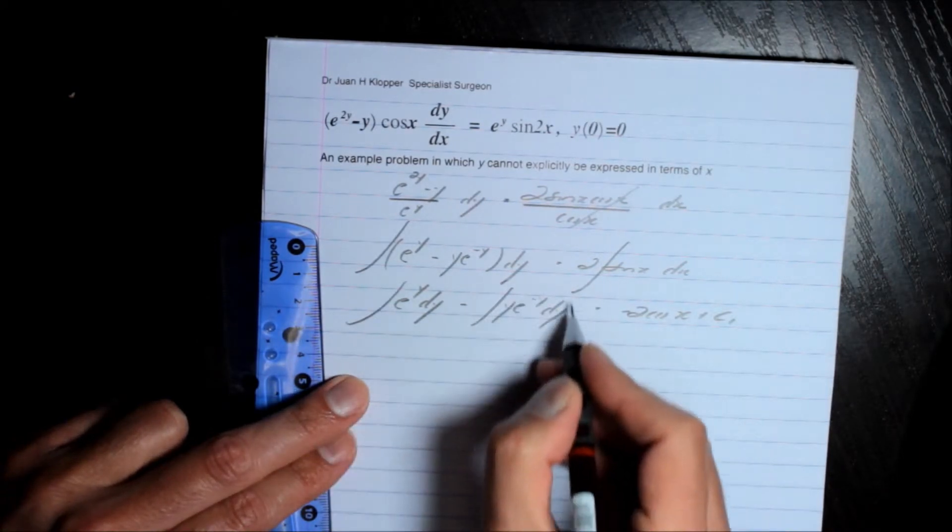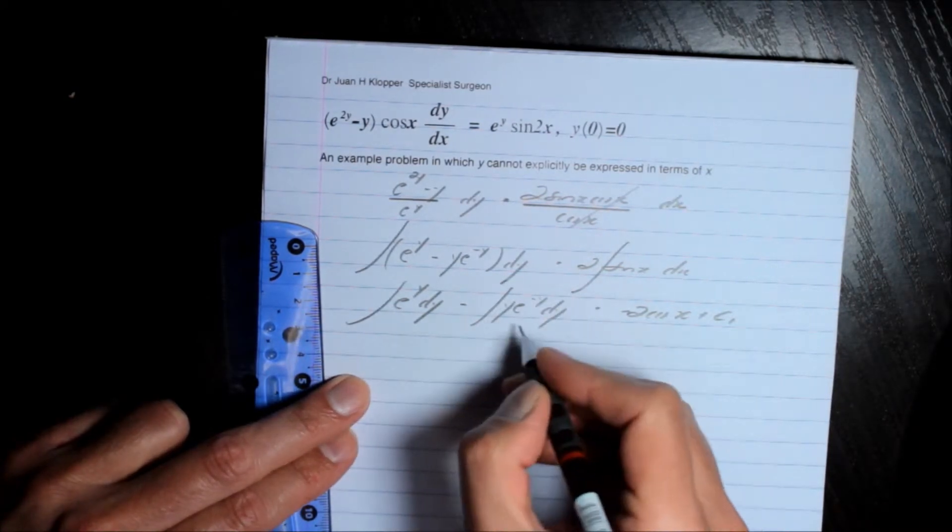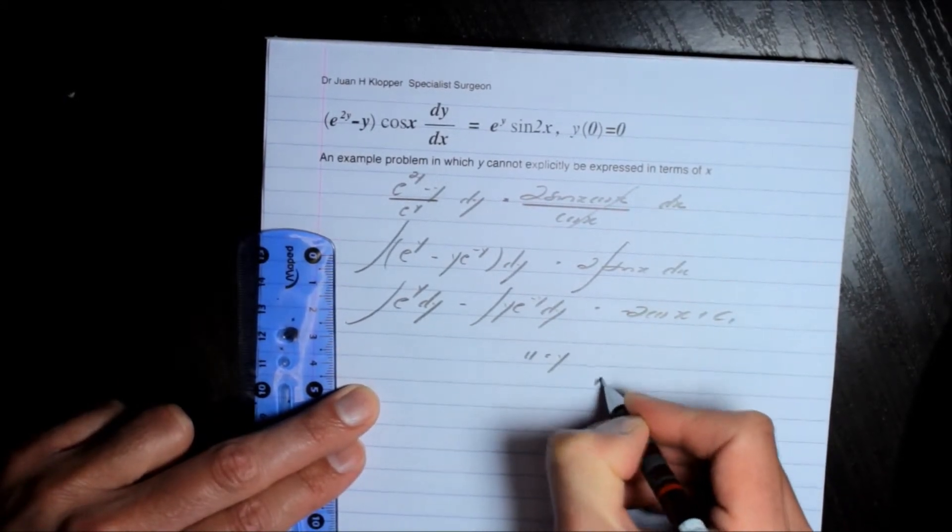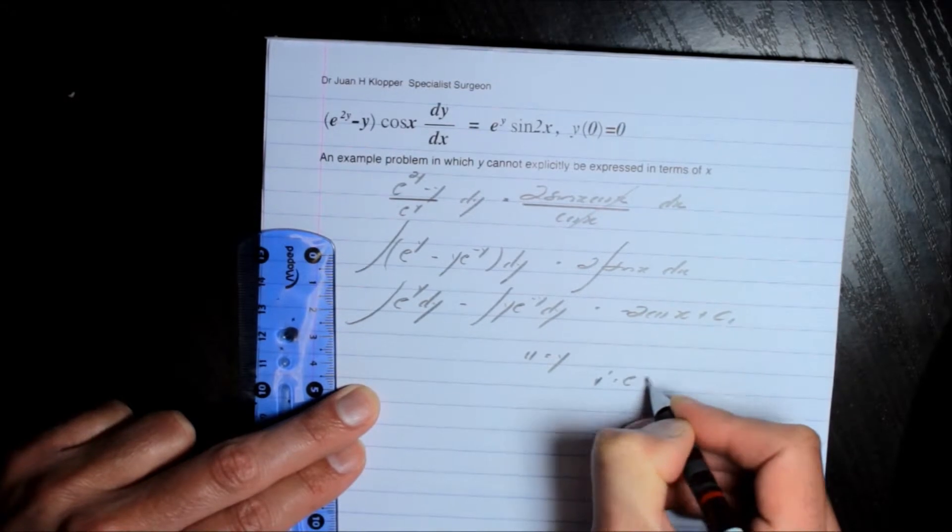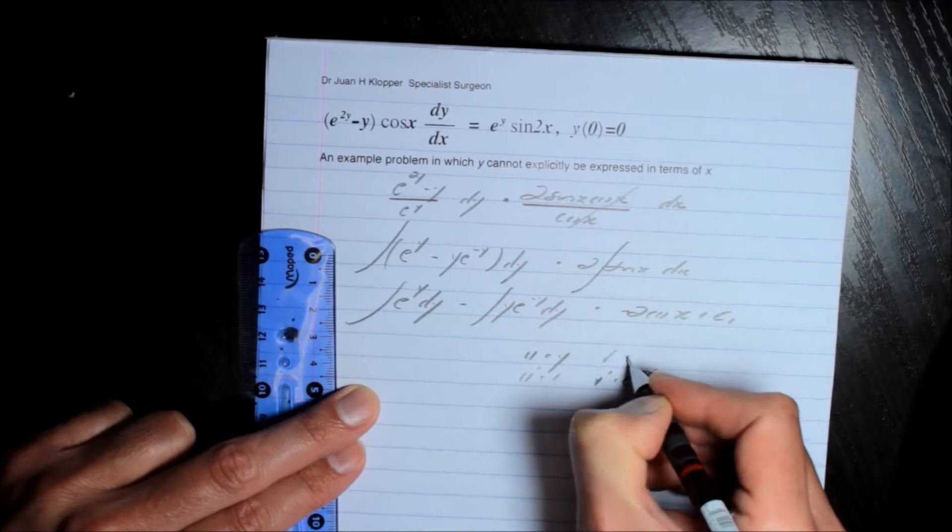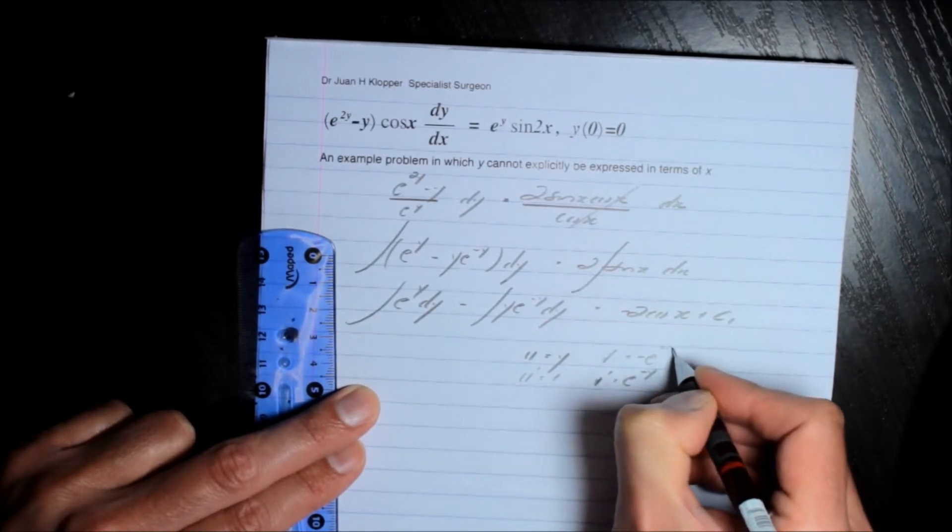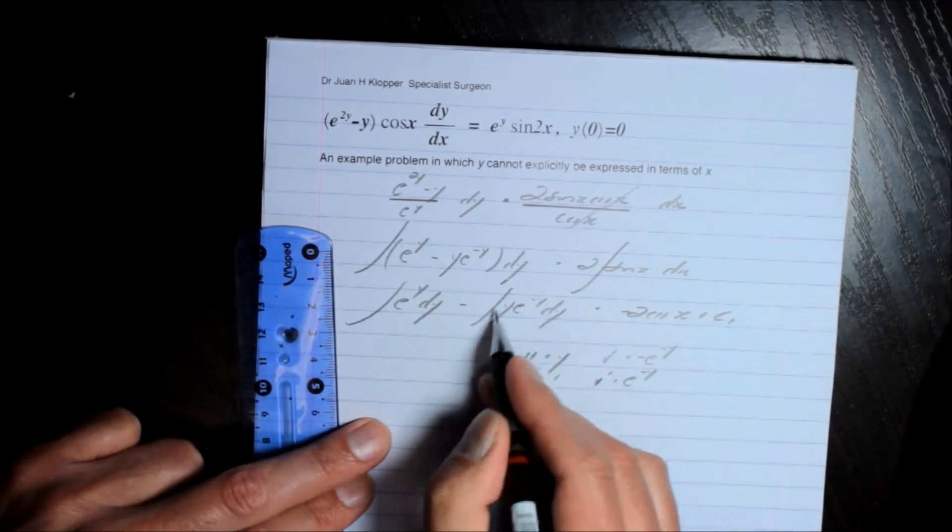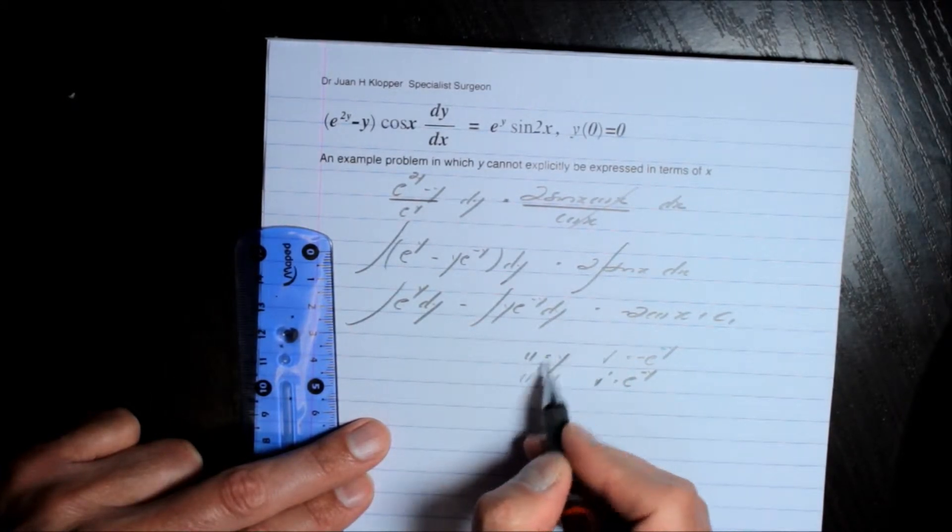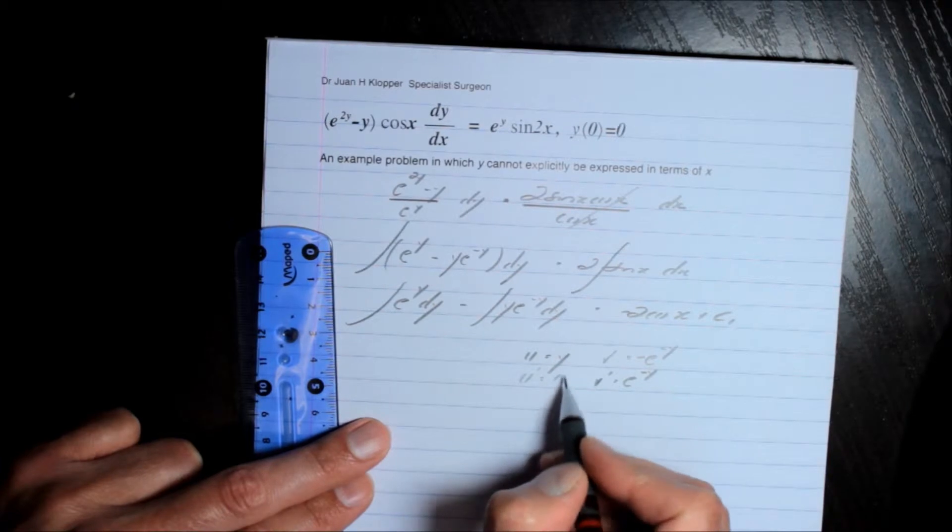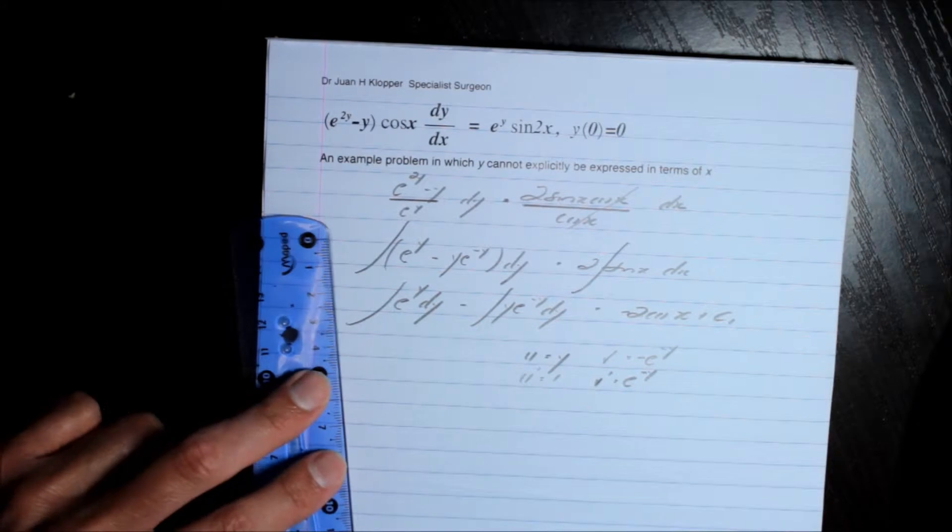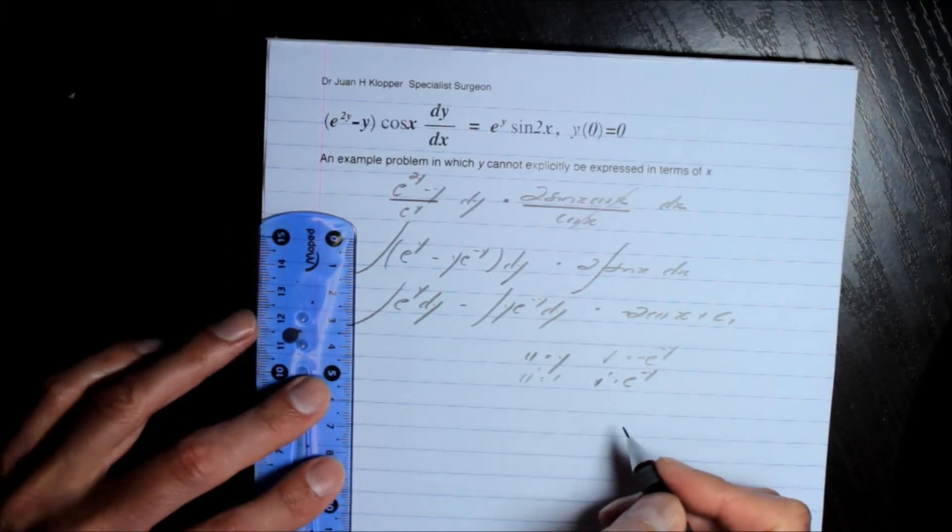Now this will have to do integration by parts. Let's just do that. We'll let u equals y, that means v' has got to equal e^(-y). That leaves u' to be 1 and v to be -e^(-y). We're just using integration by parts. I've decided to let u equals y because if I take the first derivative of u, I just have a coefficient of 1, which means I am simplifying what comes after.